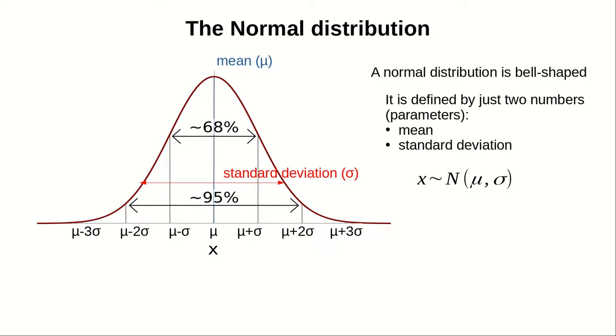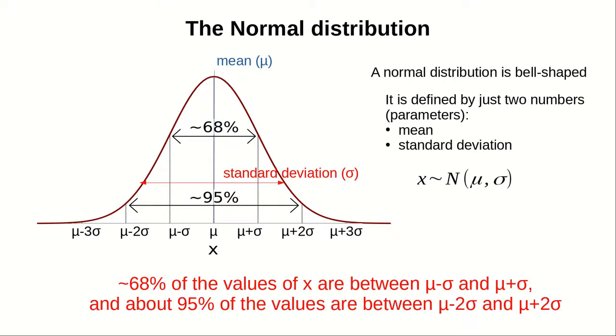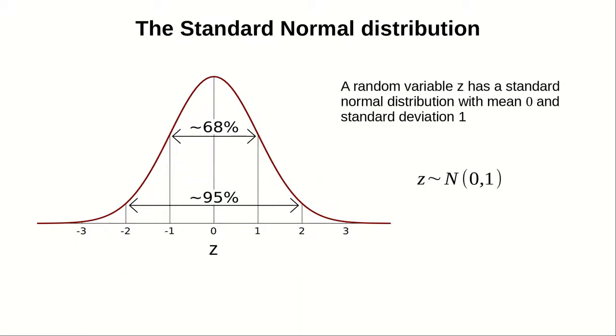68% of the values of x are between the mean plus minus one standard deviation, and about 95% of the values are between the mean plus minus two standard deviations. That's a concept that will be useful soon.